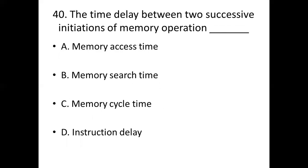Fortieth bit: The time delay between two successive initiations of memory operations is dash. Option A: Memory access time. Option B: Memory search time. Option C: Memory cycle time. Option D: Instruction delay.